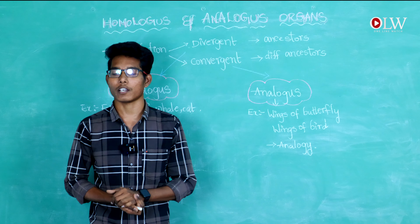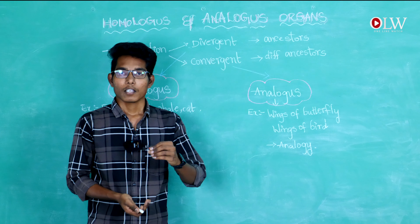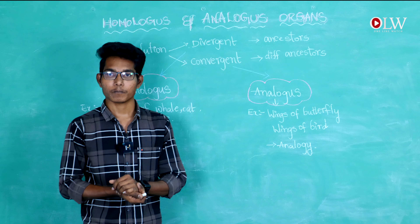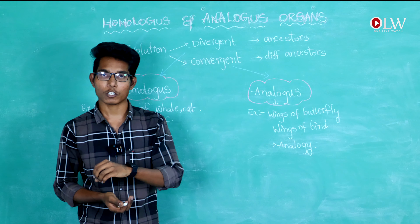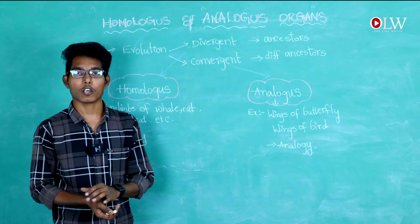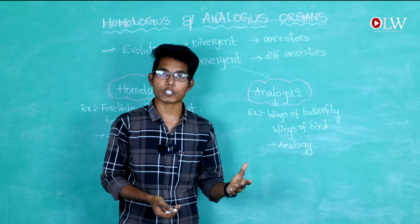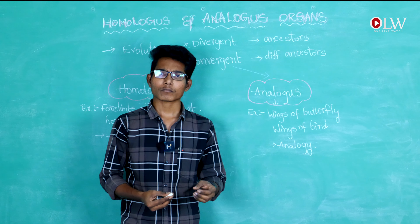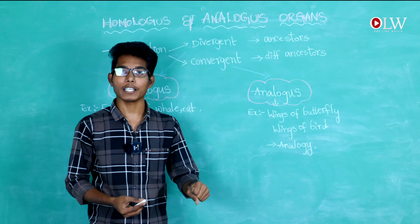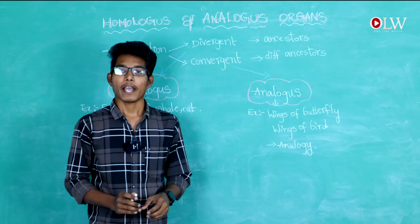Now we can study the anatomy of homologous organs. In the anatomy of homology, we can see the appendages such as the flippers of a whale, the paw of a cat, the forelimb of a horse, and the hand limb of humans — these all come under homologous organs.